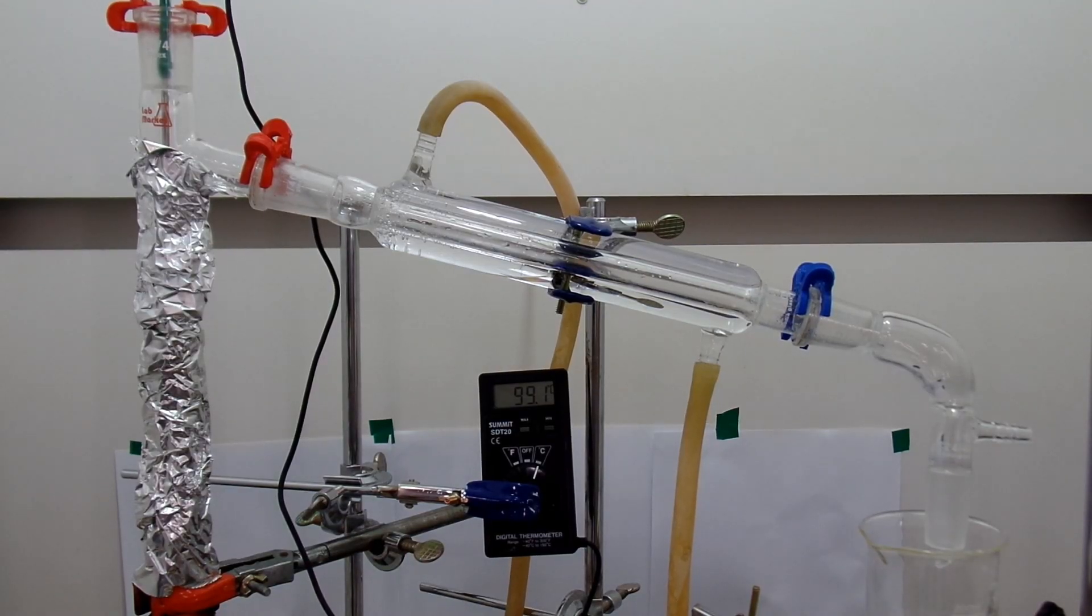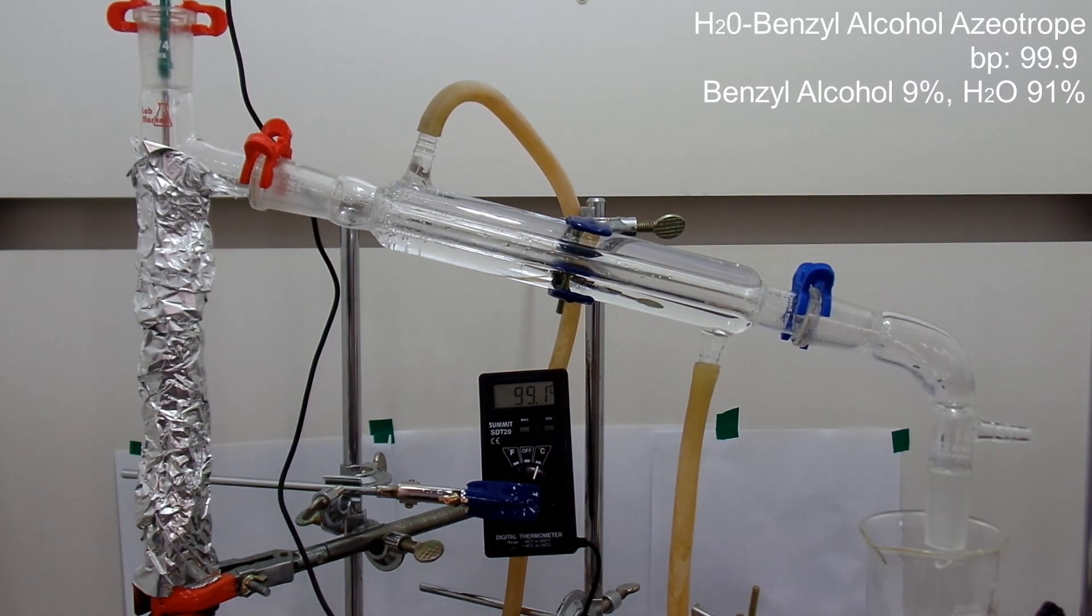So I did it with the same method, but there was a huge problem. Benzyl alcohol actually creates an azeotrope with water at 99.9 degrees Celsius. And that is frustrating because in the water-benzyl alcohol azeotrope, benzyl alcohol accounts for only 9% of the weight in the azeotrope.